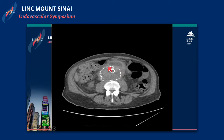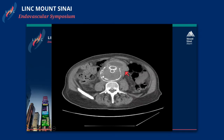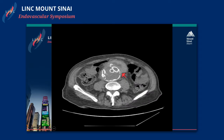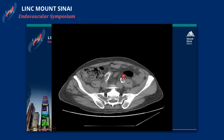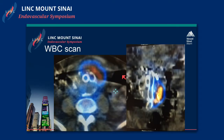This was his initial CAT scan. You can see the aortic wall is no longer in continuity, and there's a periaortic collection. We also obtained a white blood cell scan, which shows an obvious area of uptake.